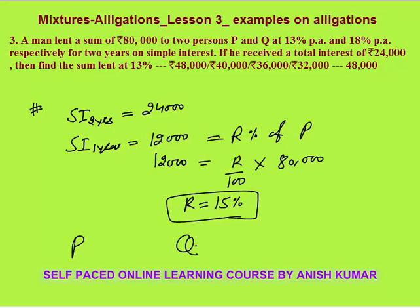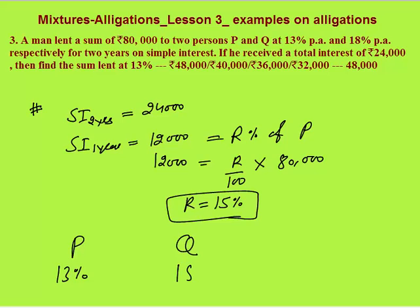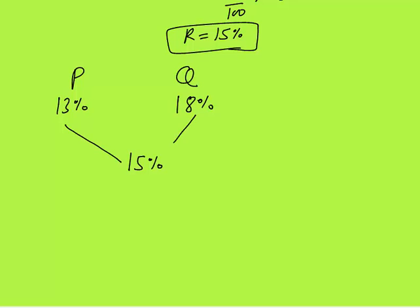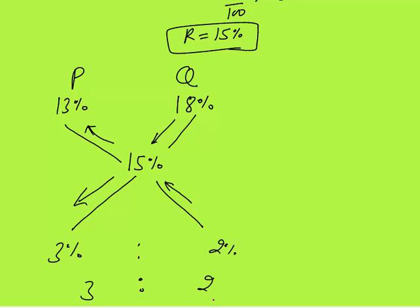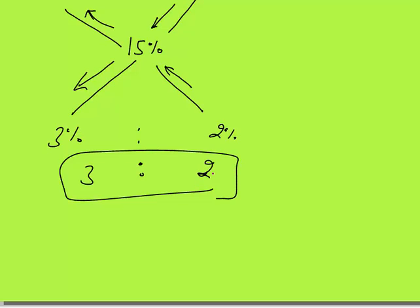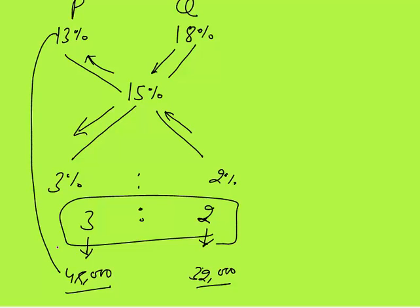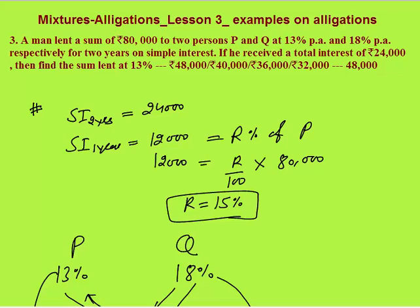Apply allegation: P was given at 13 percent, Q at 18 percent, and average interest is 15 percent. Subtract smaller from larger: 18 minus 15 is 3 percent, 15 minus 13 is 2 percent. The ratio is 3 is to 2. Total money was 80,000, so divide in ratio 3 is to 2: P's amount is 3 by 5 of 80,000 which is 48,000. The answer for money lent at 13 percent is 48,000.